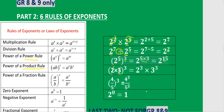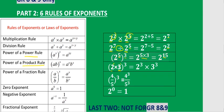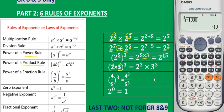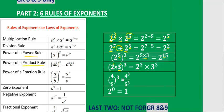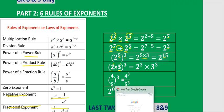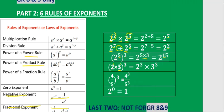The last rule is: if you take any number to the power of zero, you get 1. This applies to any number — take it to the power of zero and it gives you 1. The last two rules on the list are not required until grade 10.